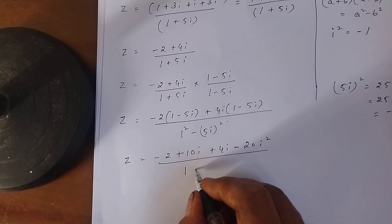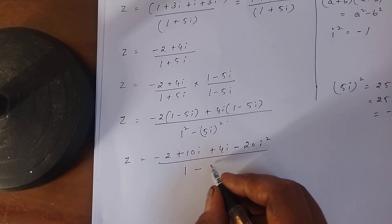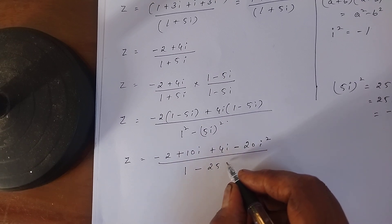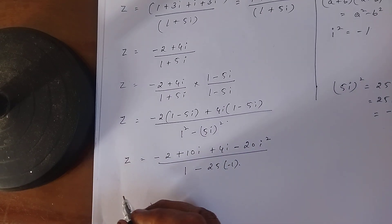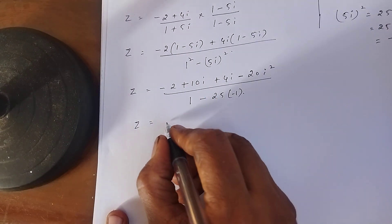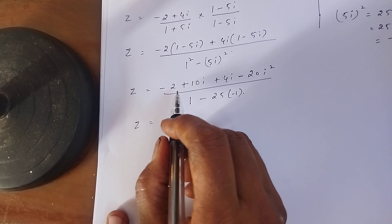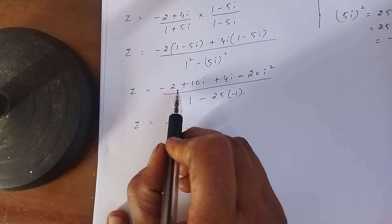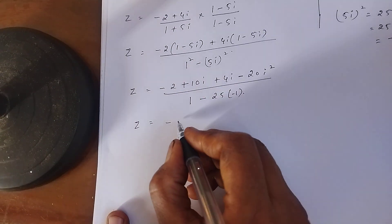1² means 1, minus 5² is 25, i² means -1. Here, Z equals minus... You just add the -2.